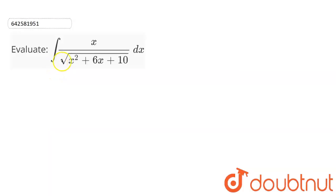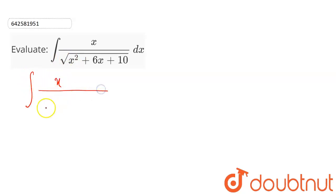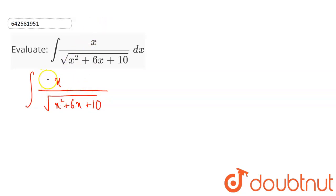Here we have to evaluate this integral. I can write the integral of x divided by the square root of x squared plus 6x plus 10. Now, if I multiply and divide by 2, this will be like this, and I will add and subtract 6.